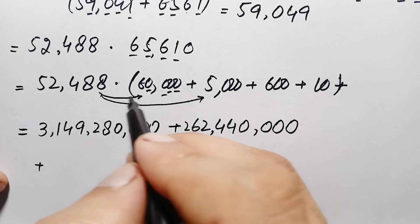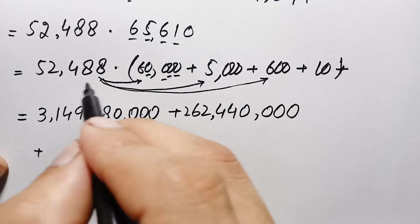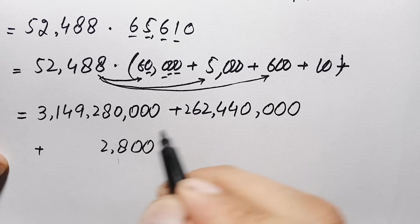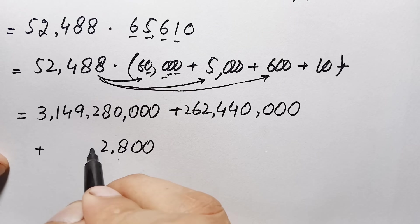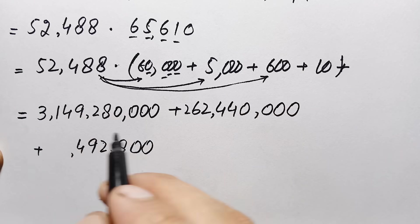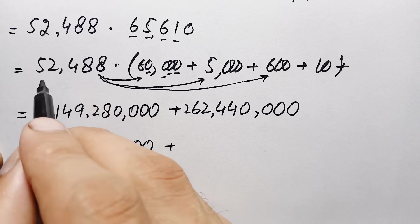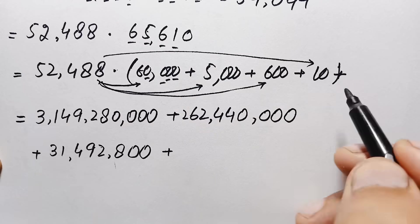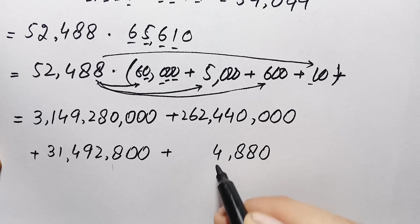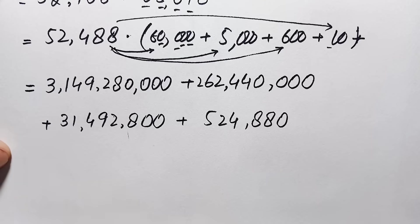Next, multiply 52,488 by 600. Multiplying by 6: 6 times 8 is 48, write 8 carry 4; 6 times 8 plus 4 is 52, write 2 carry 5; 6 times 4 plus 5 is 29, write 9 carry 2; 6 times 2 plus 2 is 14, write 4 carry 1; 6 times 5 plus 1 is 31. Appending two zeros gives 31,492,800. Finally, multiplying 52,488 by 10 gives 524,880.